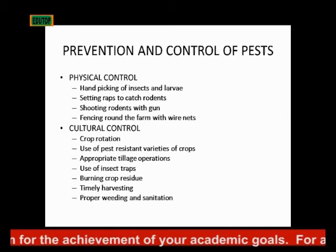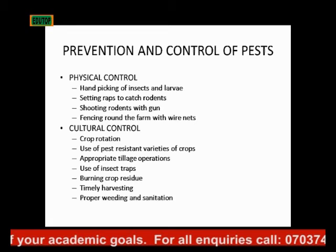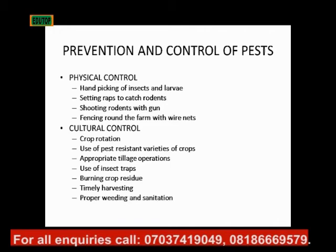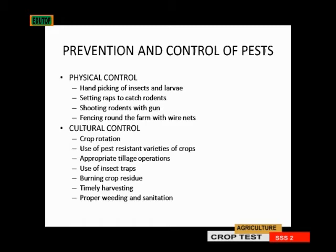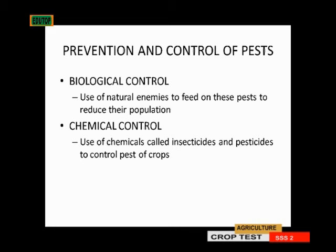Cultural control: do crop rotation, use pest-resistant varieties of crops, do an appropriate tillage system, use insect traps, and burn crop residues. For biological control, that is the use of natural enemies to feed on those pests and reduce their population. For instance, you bring in a cat to your farm where rats are disturbing you.